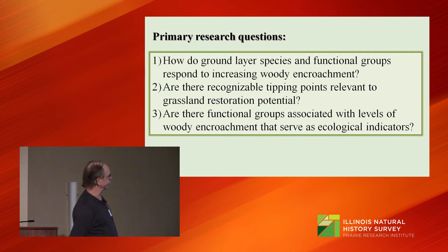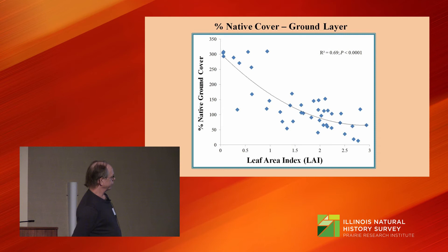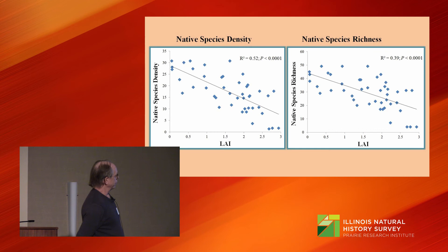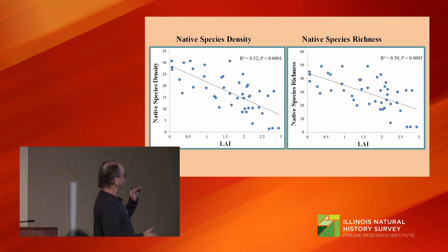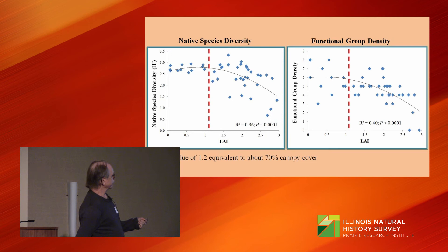When we look at the influence of increasing woody encroachment — represented by leaf area index — we see percent native cover declining quite rapidly as woody encroachment increases, leveling off at high levels. When we look at native species density and richness, we see an inverse linear relationship between diversity and woody encroachment — a signal of restoration potential, because species are still responding, albeit negatively. Native species diversity and functional group density show some resilience, with a little inertia to change until about 70% canopy cover, then they start to decline.